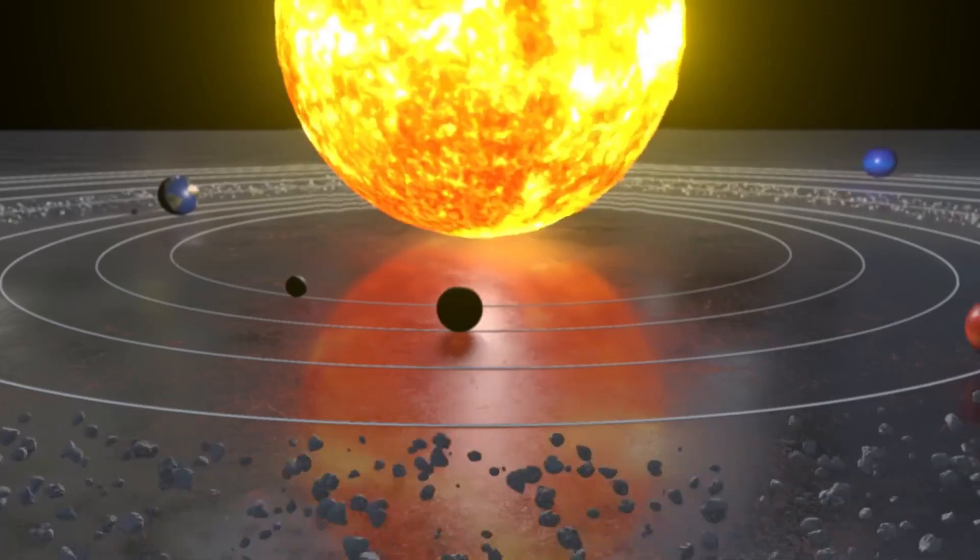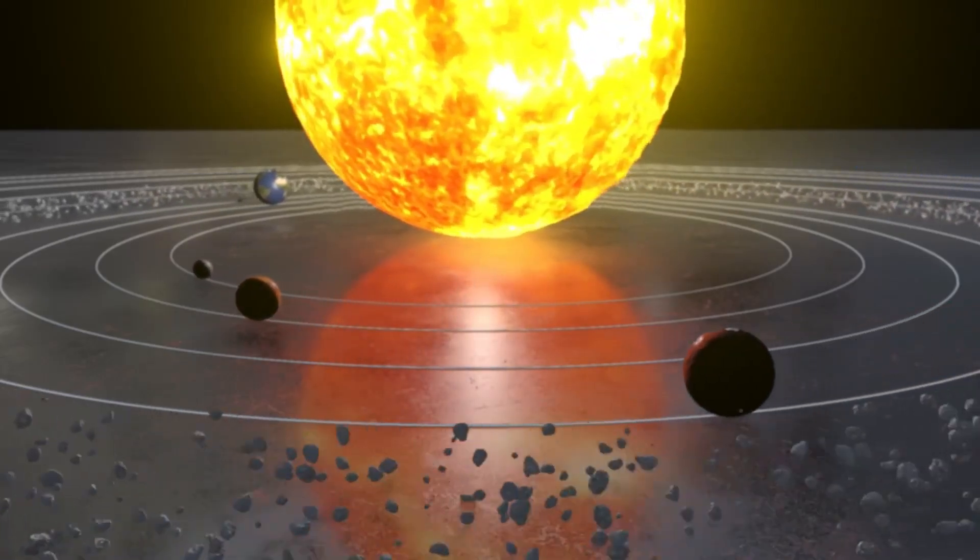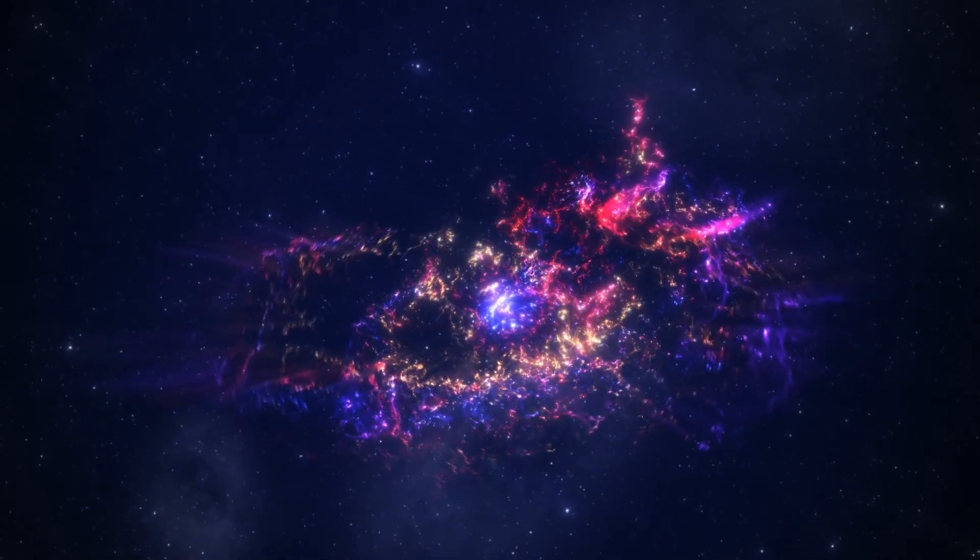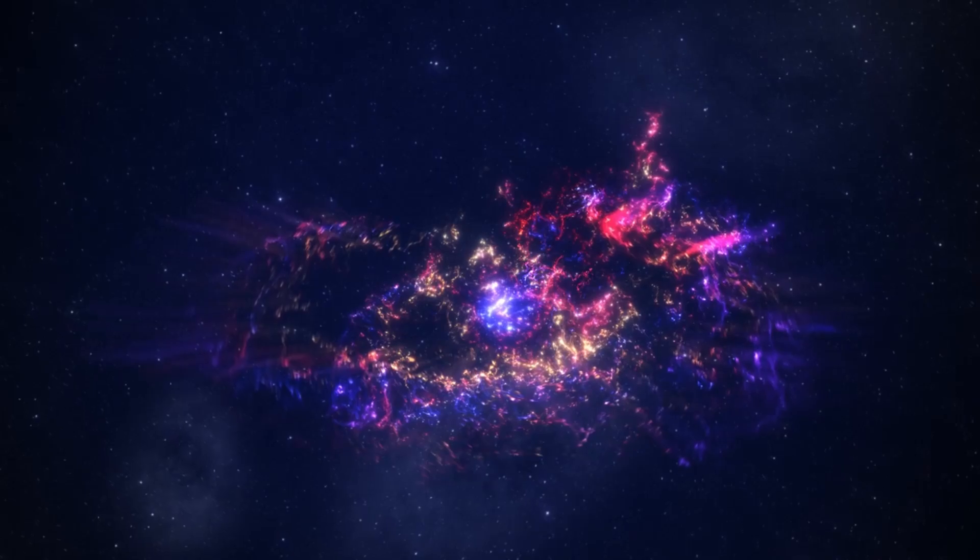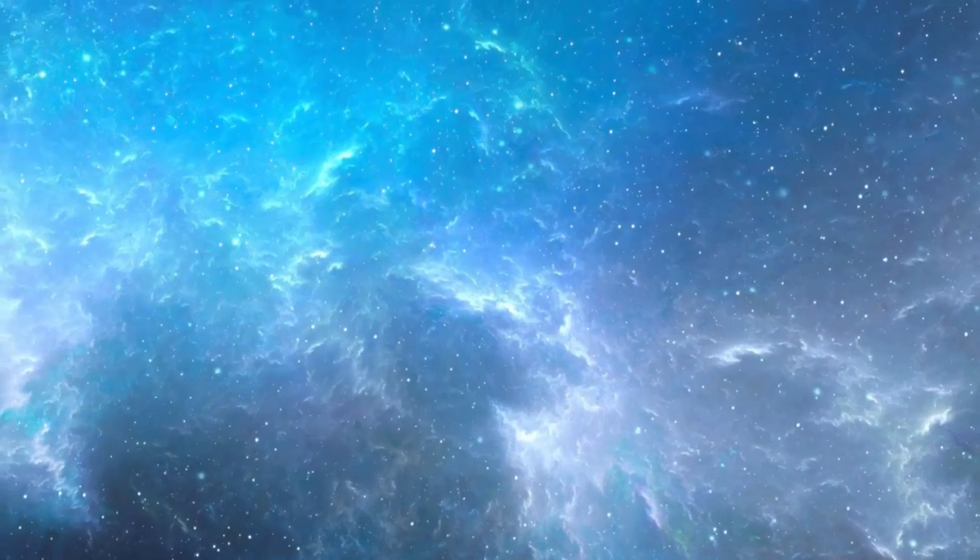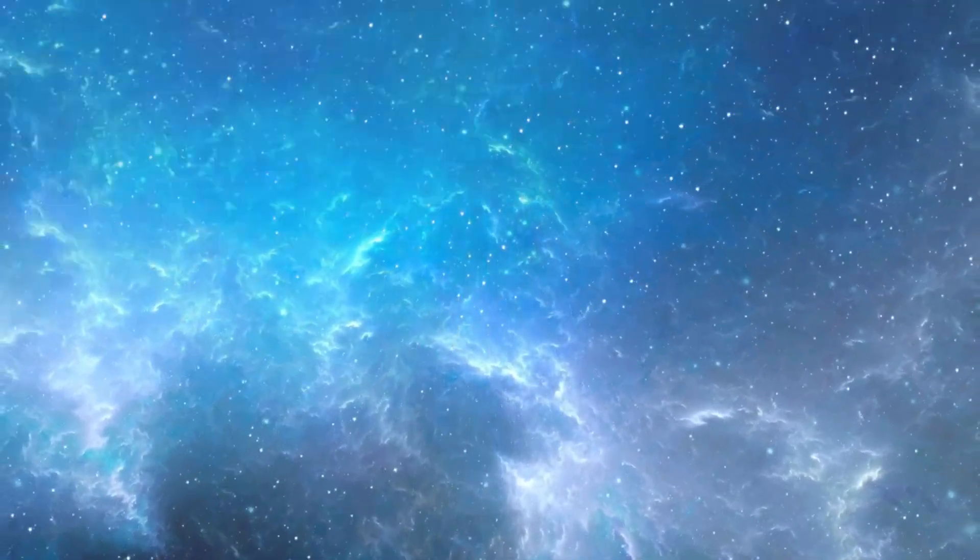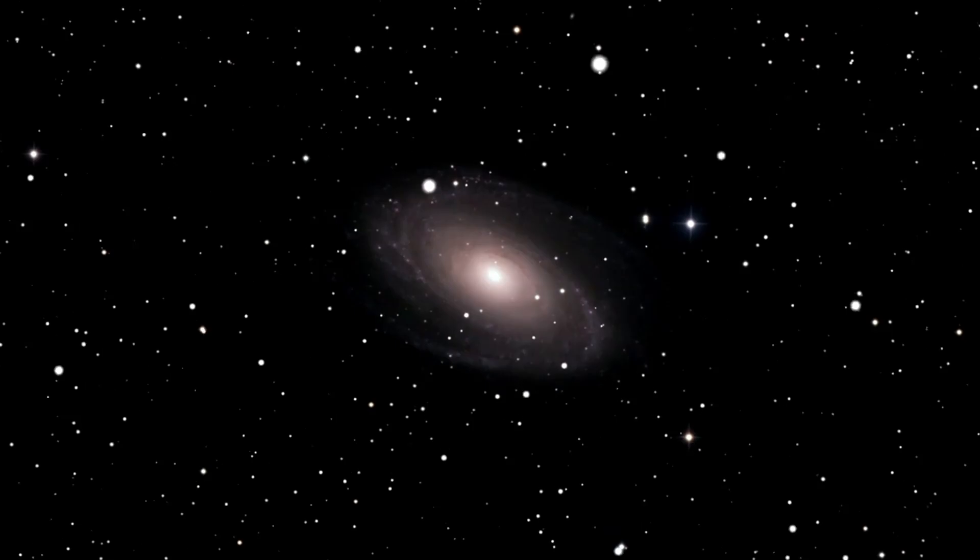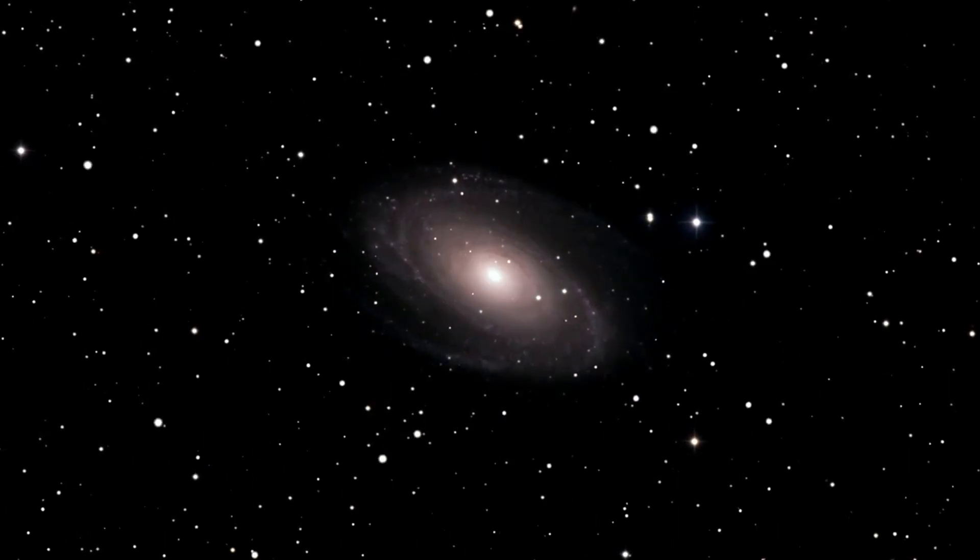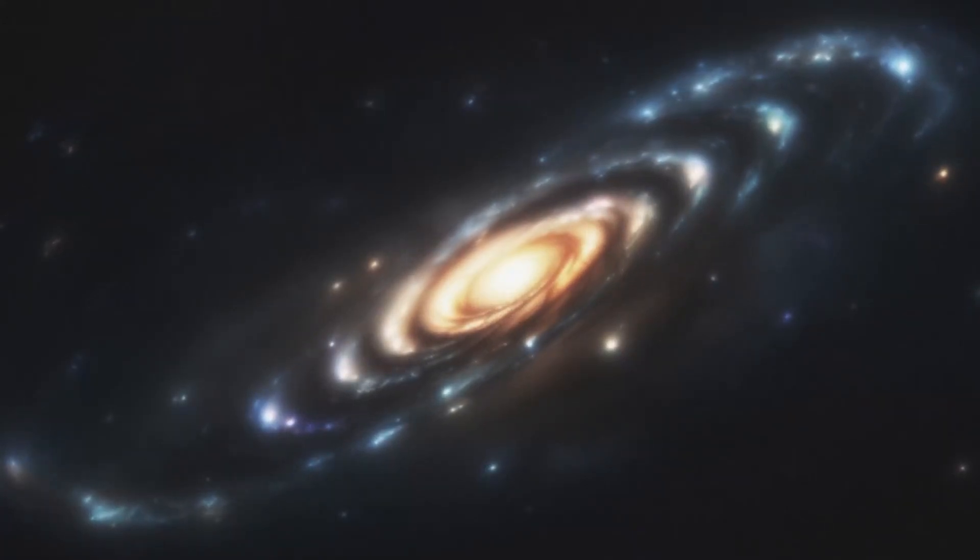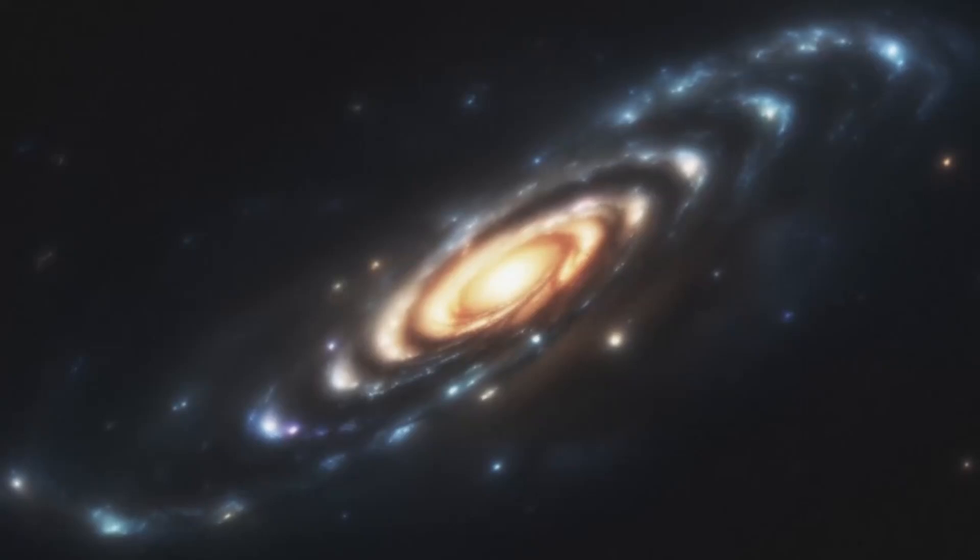One unique property of Betelgeuse is that its surface is covered in dark magnetic spots. The magnetic field in these regions is far stronger than at the normal surface, making the star cooler in these regions. To give you an idea, the spots on Betelgeuse can be twice as large as the Earth.